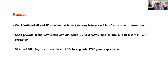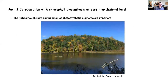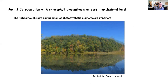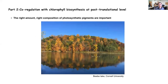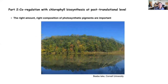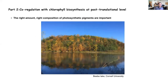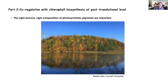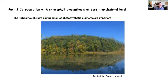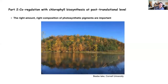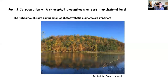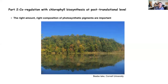We also investigated the co-regulation of carotenoid and chlorophyll biosynthesis at a post-translational level. The right amount of photosynthetic pigments is very important for plants to survive in changing environments — they need to balance carotenoid and chlorophyll content to better perform under different environmental conditions.